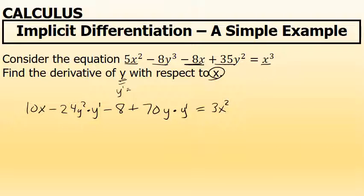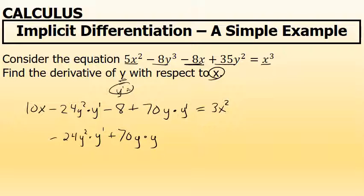I'm solving for y prime, so I'll keep the terms involving y prime on the left side of the equation and move the terms that do not have a y prime — namely 10x and negative 8 — to the right side. There's already a 3x squared on the right side, so I subtract 10x and add 8 to both sides.